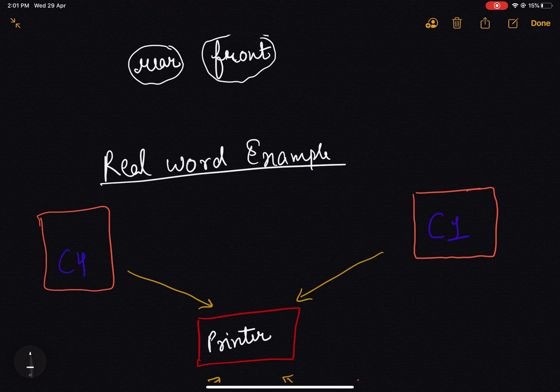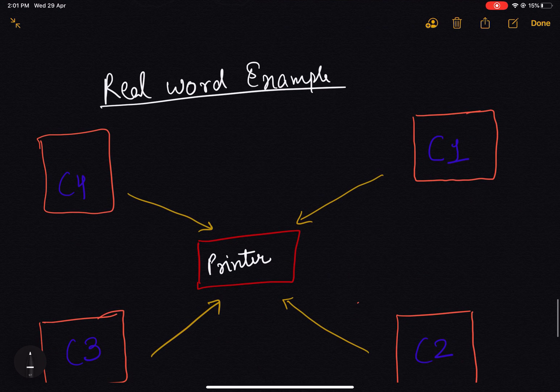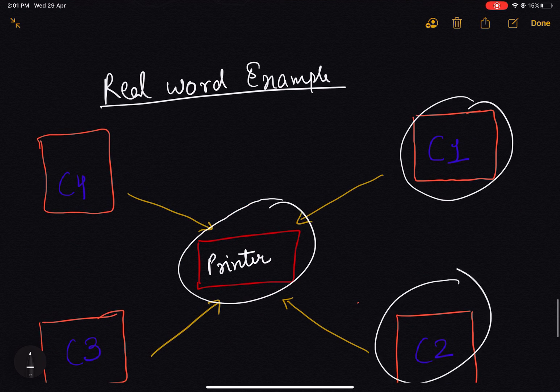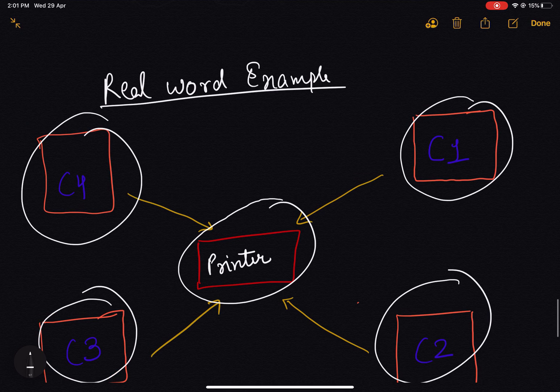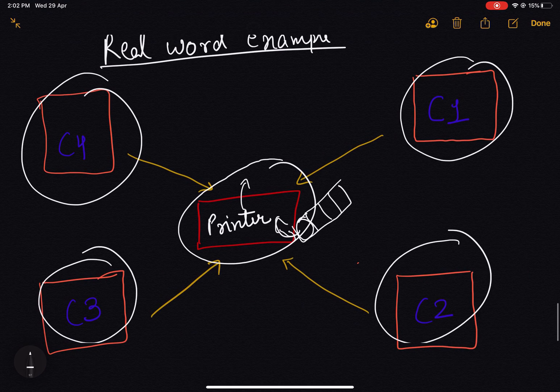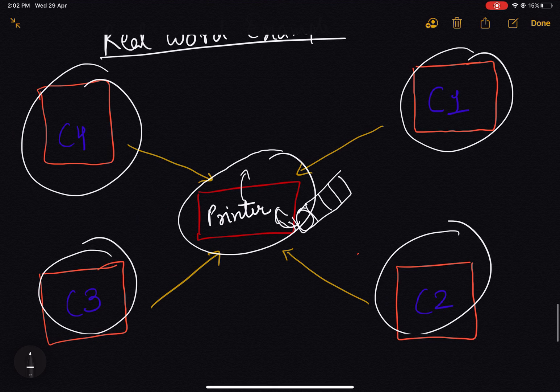Let's say we have a printer and all these computers are requesting the printer to print a document, but the printer can only print one document at a time. So what the printer will do is maintain a queue and store all the requests into the queue. After serving a request, it will pick an element from the front of the queue and serve that request. In this way it will manage everything.